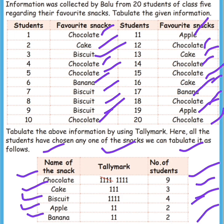Now we have to draw the tally marks. For 9: first 1, 2, 3, 4 lines, then one cross line makes 5, then 4 more lines makes 9 tally marks. We have to write it. Next 3 means 3 lines, 4 means 4 lines. Next 2 means 2 lines. Banana 2 means 2 lines. We draw the number of students value for all 20 students. We write the tally marks and names of the snacks. This is the answer.